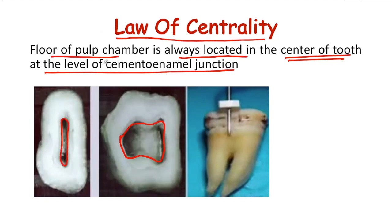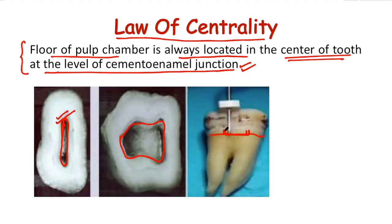Another thing this law says is that the floor of the pulp chamber is located at the level of the cemento-enamel junction — this is the cervical line. From this, we can conclude that this law helps us to decide how deep we can go without causing any perforation.